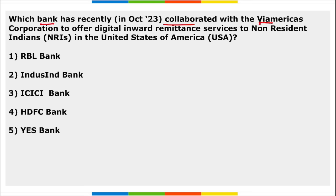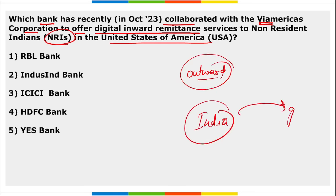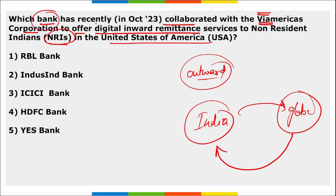Which bank recently collaborated with VM Mursa's Corporation to offer digital inward remittance services to NRIs in the USA? Inward remittance means money coming from outside India into India. This was launched by IndusInd Bank.